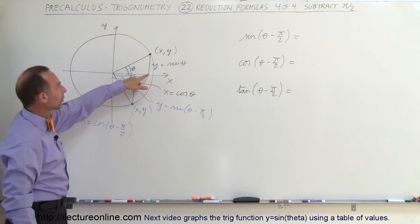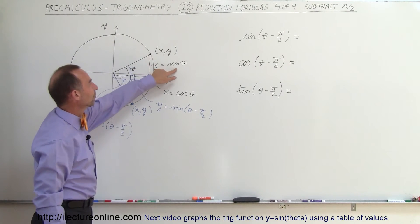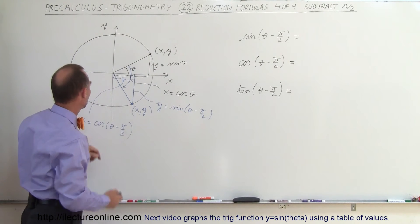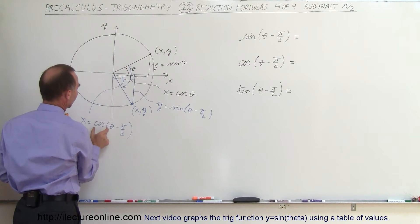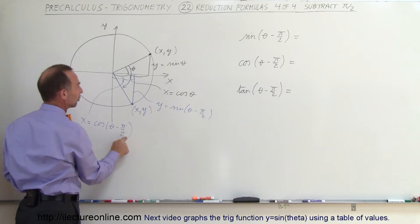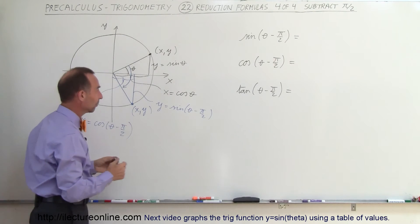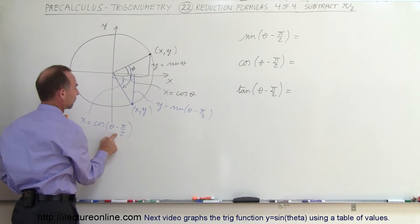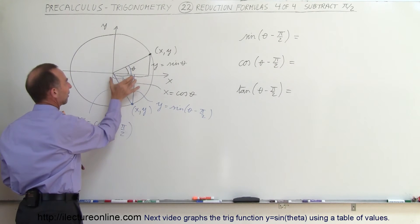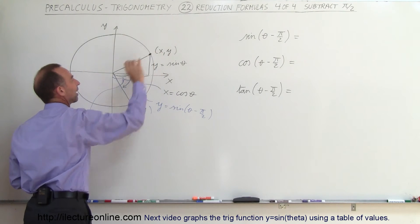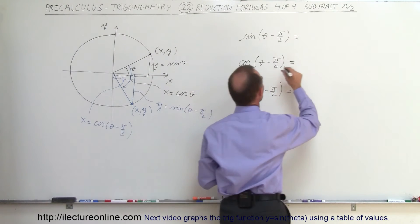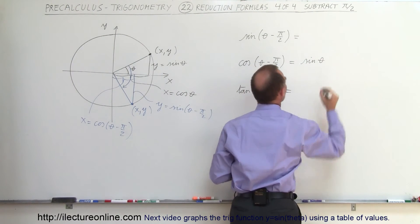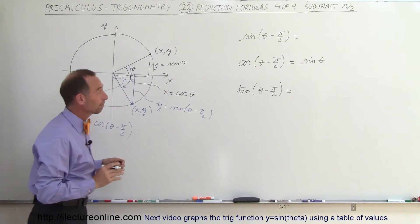We can say that the sine of theta is equal to the cosine of theta minus π/2. That means the cosine of theta minus π/2 is equal to the sine of theta. That's our first reduction formula.